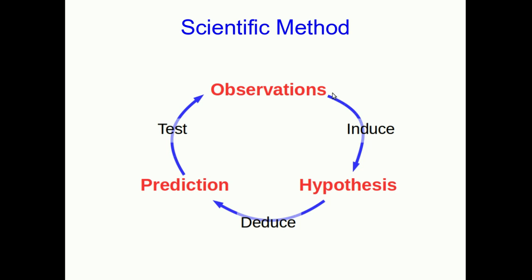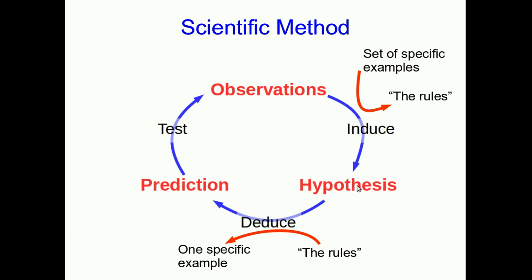In the scientific method we have some observations, and we try to look for patterns in them to figure out rules. This is called inductive reasoning. Those rules we formulate into a hypothesis, and once you have your hypothesis, you can use it to make predictions. So you predict what will happen in some specific case, and that allows you to design an experiment and test whether your prediction was correct. If your prediction wasn't correct, then you have to go back and revise your hypothesis, and you just keep doing this, refining your hypothesis each time you go around this cycle.